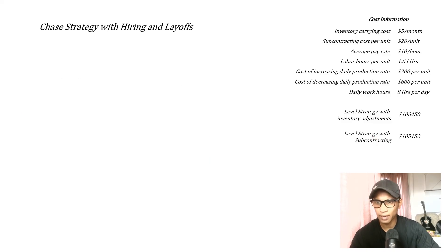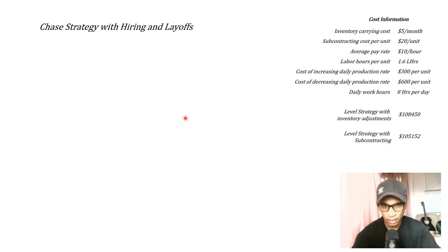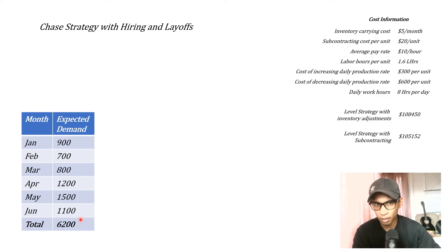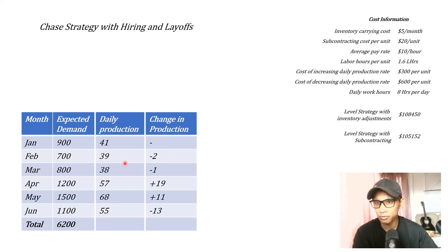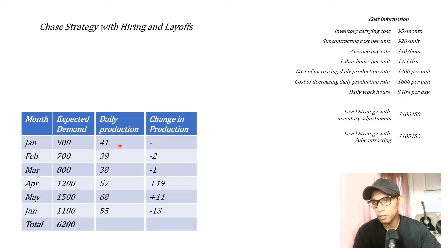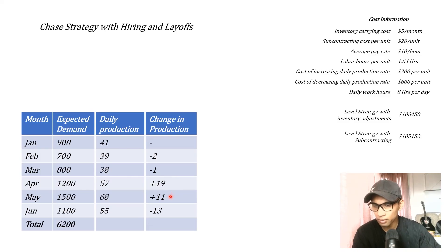The third strategy is the chase strategy with hiring and layoffs. We try to match production exactly to demand each month by adjusting the daily production rate. The daily production rates are: January 41, February 39, March 38, April 57, May 68, June 55. Assuming daily production was 41 in December, the changes are: February −2, March −1, April +19, May +11, June −13.